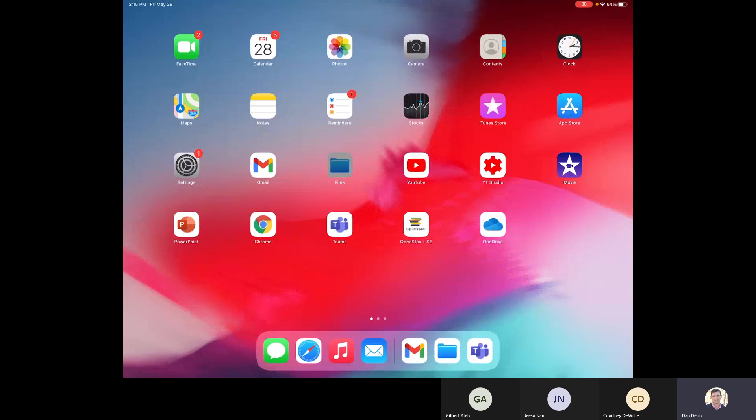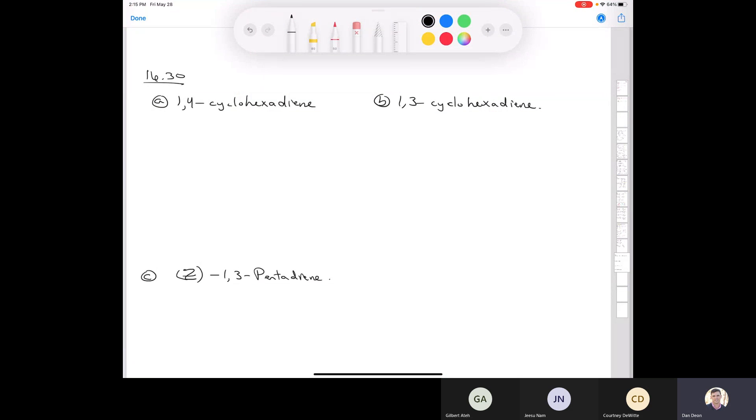All right, so we're starting with 16.30, and let's take a look at all the questions here. The first one is 1,4-cyclohexadiene. This is a molecule that's come up today and maybe in the previous class. So if you have a cyclohexane, and then this is some kind of diene, that means that there's two double bonds in it.